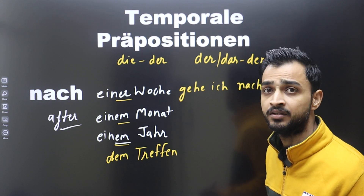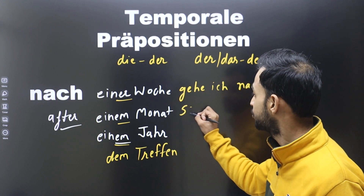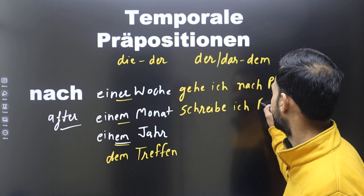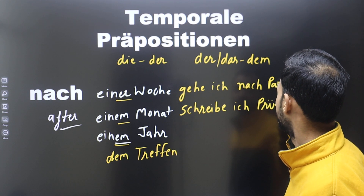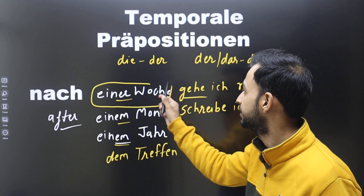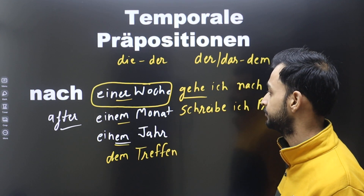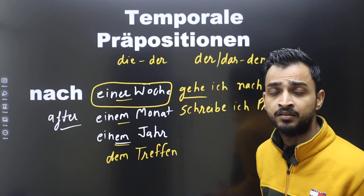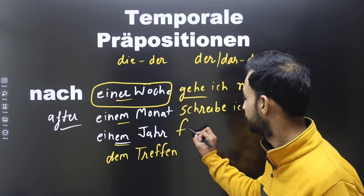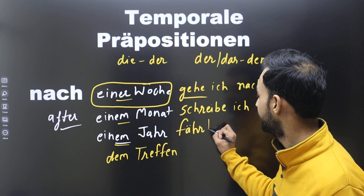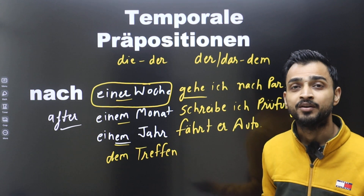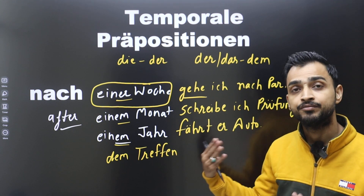After one month: 'nach einem Monat schreibe ich die Prüfung' — after one month I write the exam. Note the verb comes in second position. After one year: 'nach einem Jahr fährt er Auto' — after one year, he drives a car. You can use the third person: 'er fährt Auto.'